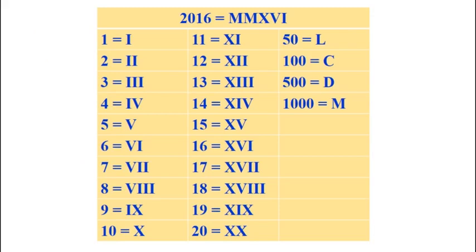This is the table of Roman numerals for some numbers. 1 is I, 2 is II, 3 is III, 4 is IV, 5 is V, 6 is VI, 7 is VII, 8 is VIII, 9 is IX, 10 is X. Then 11 is XI, 12 is XII, 13 is XIII, 14 is XIV, 15 is XV, 16 is XVI, 17 is XVII, 18 is XVIII, 19 is XIX, 20 is XX. And some special: 50 is L, 100 is C, 500 is D and 1000 is M.